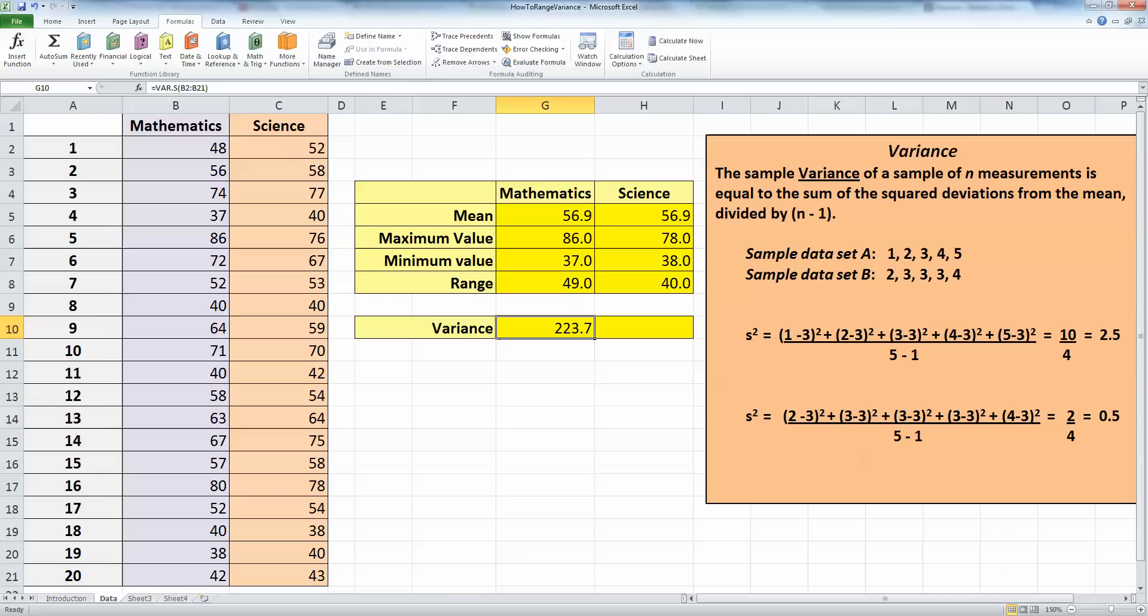And this tells me that my variance for the maths test is 223.7, and using autofill again, I can copy the same formula over to give us the variance for the science test, and we can see that the variance there is 187.3.